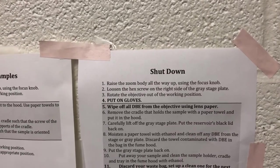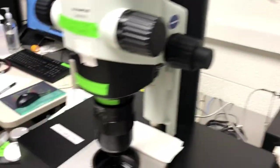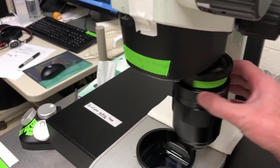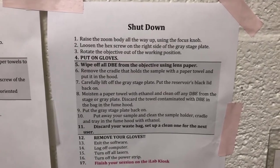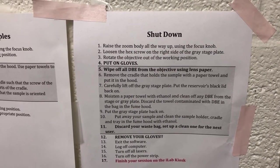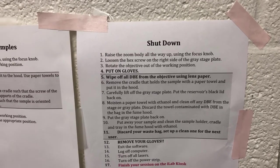The next step is to rotate the objective out of the working position. Grab this, rotate it there. Step number four is to put on gloves and after that we're going to wipe off all the DBE from the objective using lens paper.